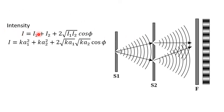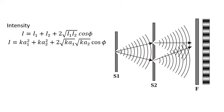I equals I1 plus I2 plus the interference term. I1 is the intensity coming out from slit S1, I2 is the intensity of the light coming from the second slit, and I is the net intensity on the screen. Now I can write this intensity equation in terms of its amplitude: I equals K·A1², where K is any random constant. A1 is the amplitude of the light from the first slit, A2 is the amplitude from the second slit, and this last term is your interference term.